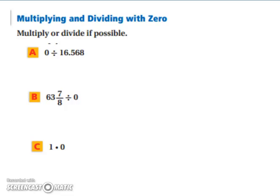Let's practice. So we have multiply or divide, if possible. So we have zero divided by 16.68. Well, it's zero divided by something, so we know that we're going to have a zero as an answer. For B, we have this fraction divided by zero. Since it's dividing by zero, it's undefined. Remember, you can't divide something by zero. And now we have 1 times zero, which is zero.